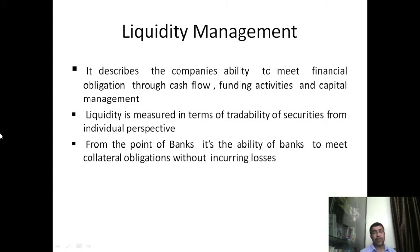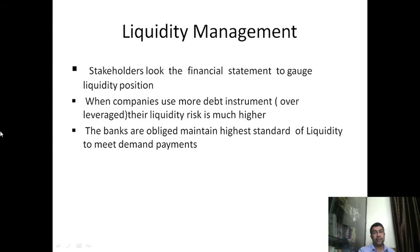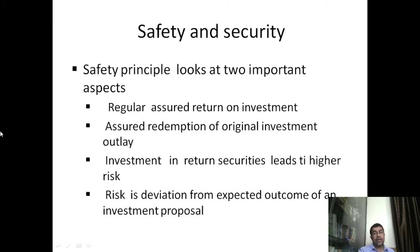From an individual perspective, liquidity is measured in terms of the tradability of securities. For example, a fixed deposit in a bank may take one or two years to withdraw, and early withdrawal incurs a penalty. From the bank's perspective, liquidity is the ability to meet collateral obligations without incurring a loss. Stakeholders look at financial statements to gauge liquidity using the current ratio, quick ratio, and cash ratio. Companies that use more debt instruments are over-leveraged and face higher liquidity risk. Banks are obliged to maintain the highest standard of liquidity to meet demand payments.